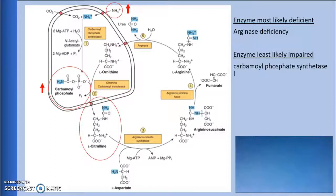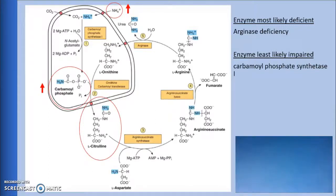This leaves argininosuccinate synthase, argininosuccinate lyase, and arginase. However, we saw an example of an argininosuccinate synthase or argininosuccinate lyase deficiency in lecture, which showed increased levels of citrulline. This leads me to believe that arginase is the enzyme that is most likely deficient.